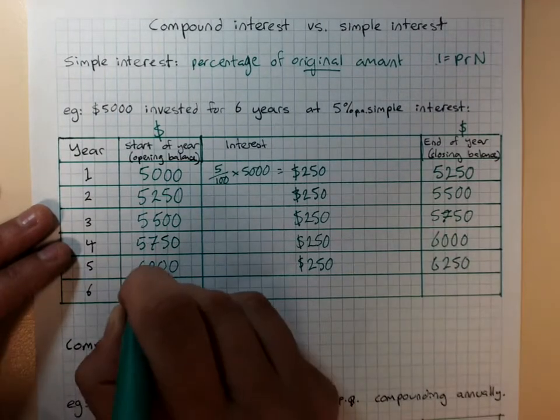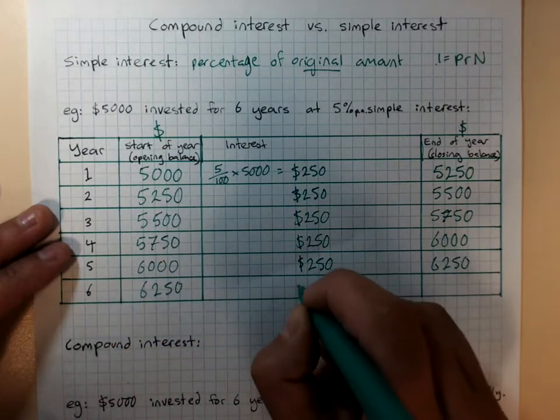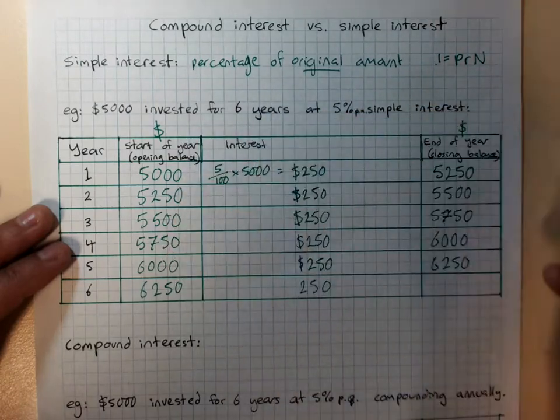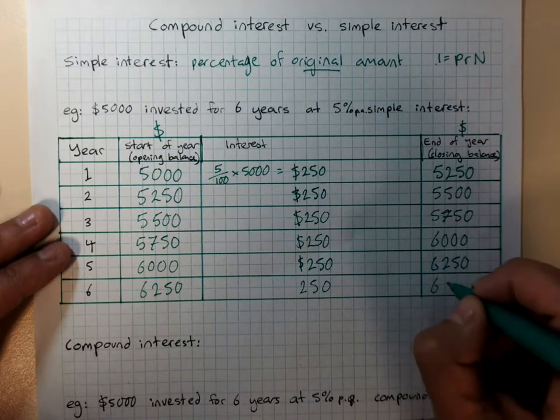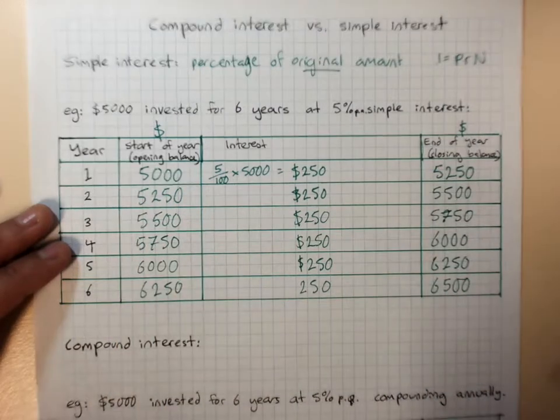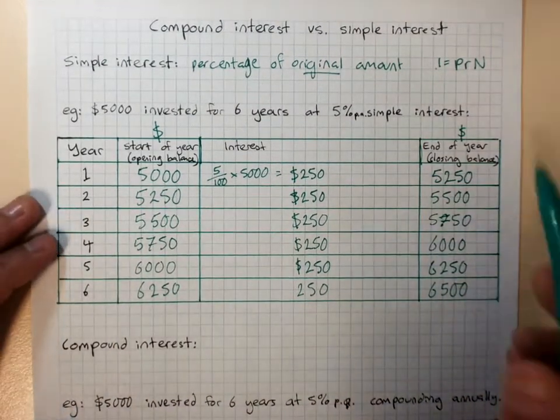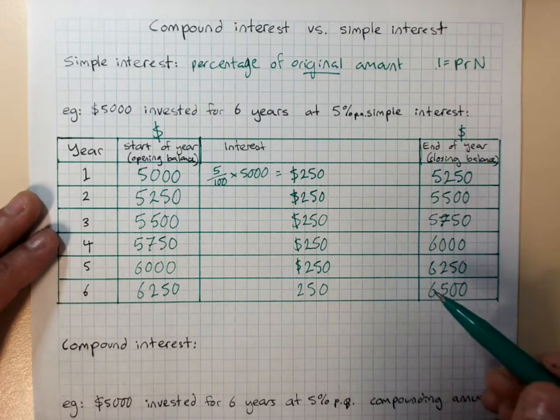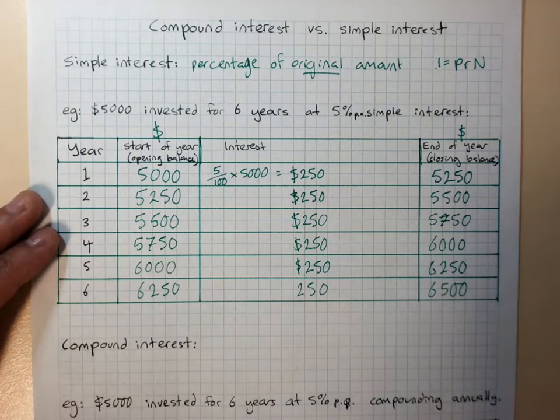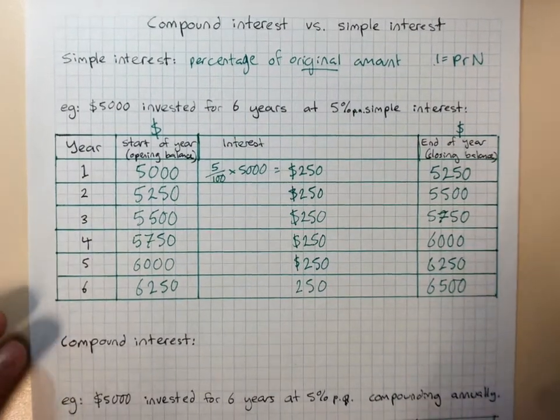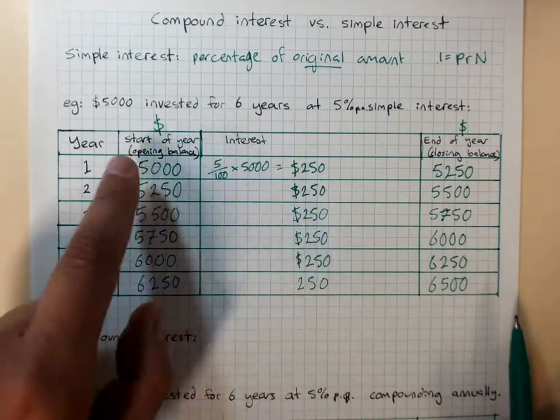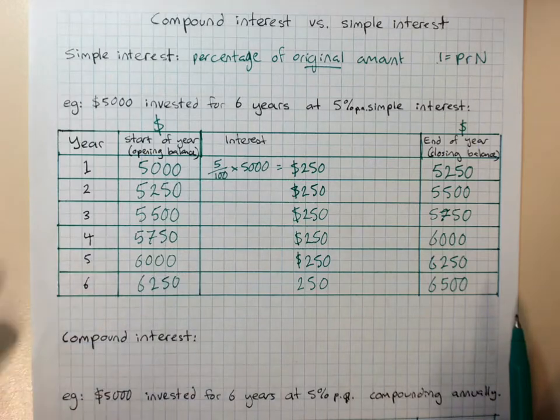So, I'm just adding on $250 every year. I didn't need to put dollar signs in here because I should have had it up the top. So, at the end of six years, I've got $6,500. I started with $5,000. I could have used my simple interest formula to work that out instead, to work out that I earned a total of $1,500 interest. But that's simple interest, with just earning the same amount of interest, a percentage of my starting amount, every time.